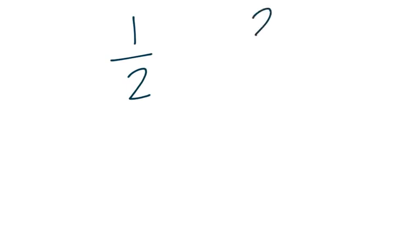Now, we won't always have fraction bars in front of us in our everyday lives. So let's think of a strategy that we could use to just decide by looking at our numbers if these fractions are equivalent. Let's use one half and two fourths. These are fractions we already know are equivalent to each other, but we're going to learn a strategy that will help us if we're not sure.